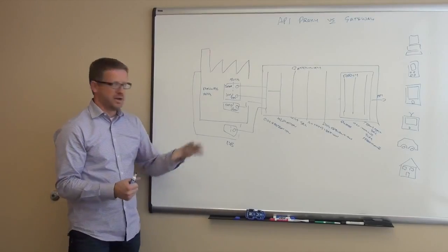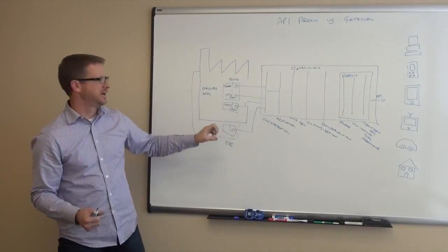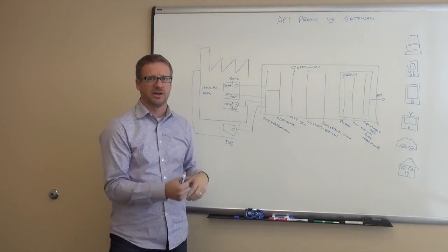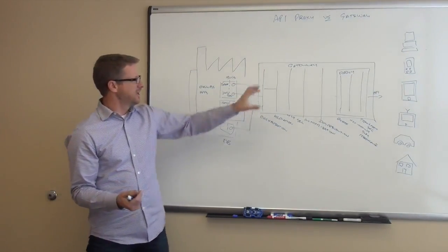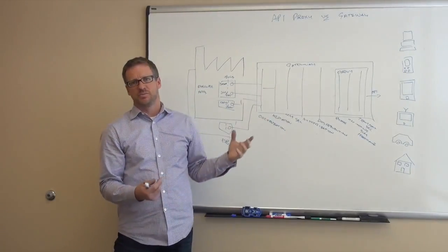So that's question one. ESB, part of your application tier, and the gateway existing externally. The other question is, well, what we've written up here, API proxy versus gateway. If the gateway does all this, why would I ever want just a proxy?